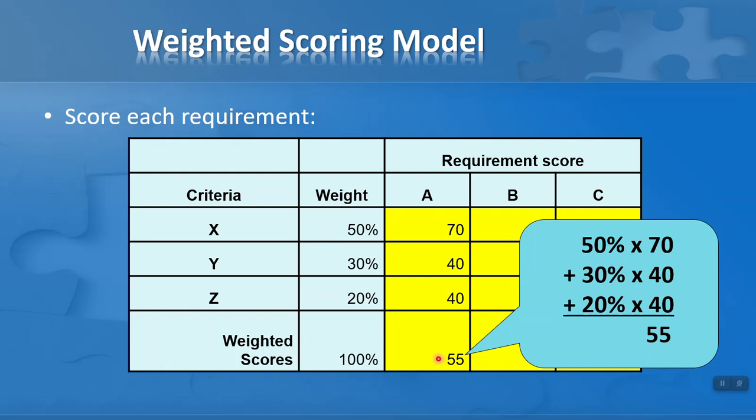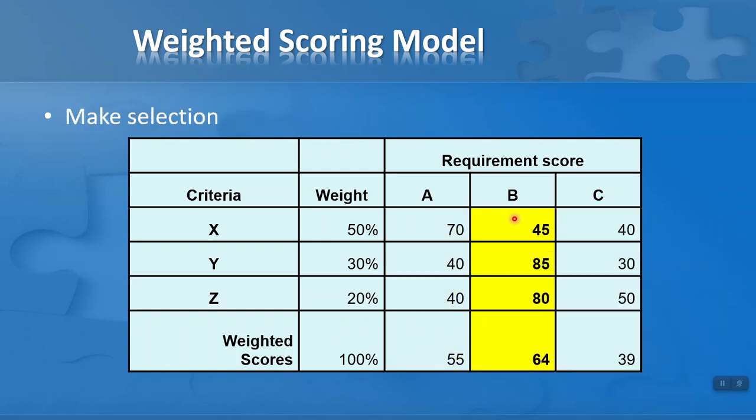For Solution A, I multiply each score by the weighting and total them up. The weighted score of 55 comes from 50% multiplied by 70, plus 30% multiplied by 40, plus 20% multiplied by 40. You can do this in your spreadsheet. We do the same for Solution B and Solution C. In this case, Requirement B has the highest weighted score of 64, so this is the one we prioritize and choose.